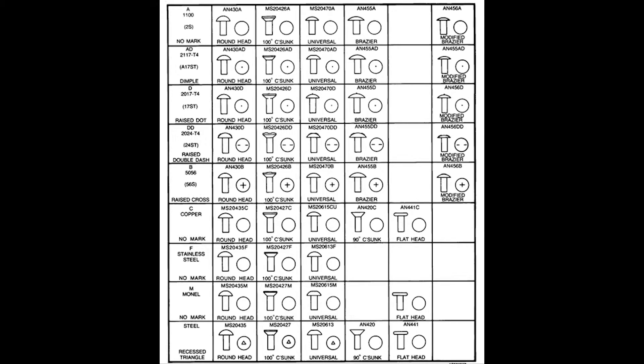Selection of the rivet material for any application is dependent upon usage, corrosion resistance, and strength. Whenever possible, use the same rivets and type as those which were originally used for installation. The King Air SIRM in Chapter 20-50-01-201 identifies the different materials of rivets and identifies the types of alloys the rivets are made from.